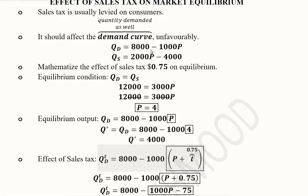We are given the demand function and the supply function, and we are trying to mathematize the effect of the sales tax of $0.75 and how this will change the equilibrium. We do this by using the equilibrium condition — setting quantity demanded equal to quantity supplied — and considering both demand and supply functions. The result gives us p equal to 4.